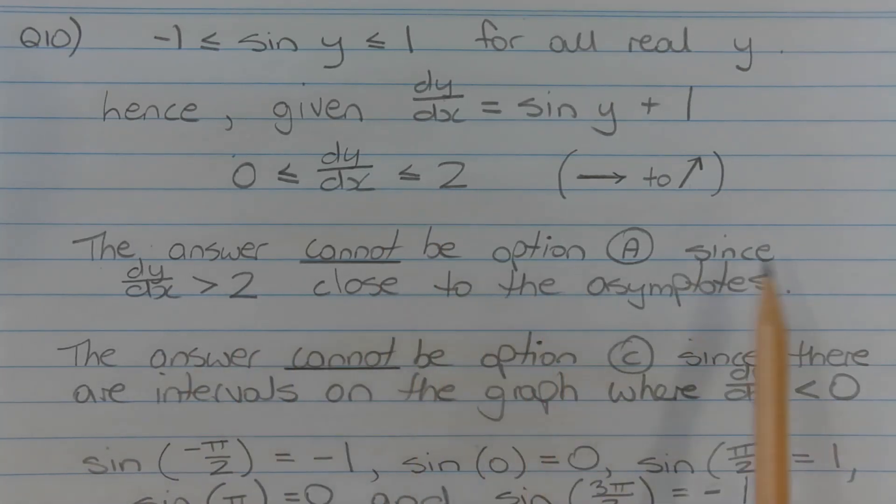The answer cannot be option A since dy/dx is greater than 2 close to the asymptotes. The answer cannot be option C since there are intervals on the graph where dy/dx is less than 0.